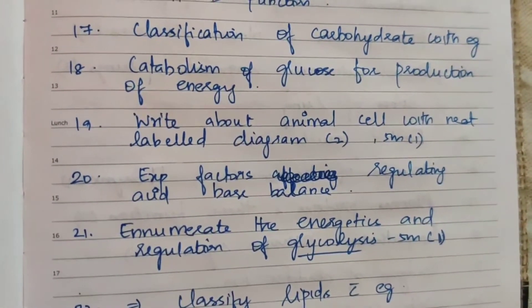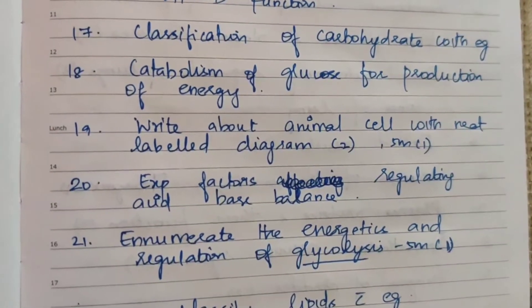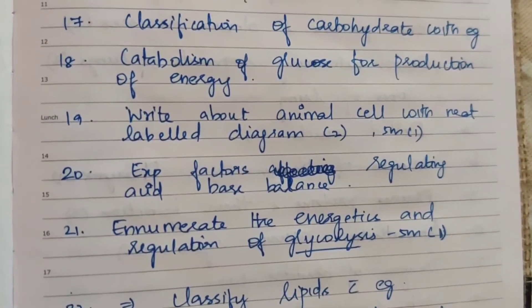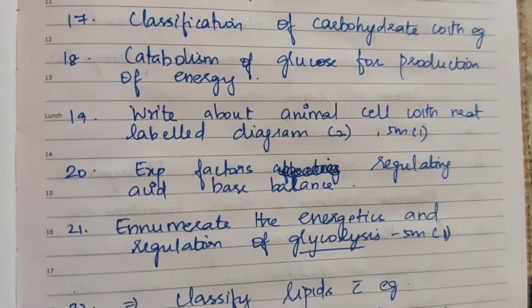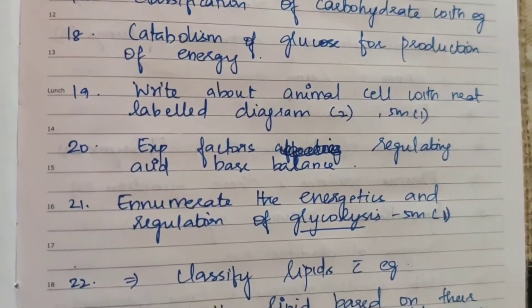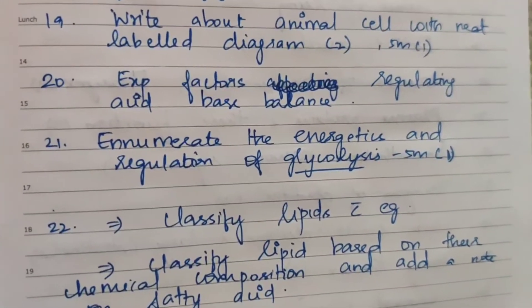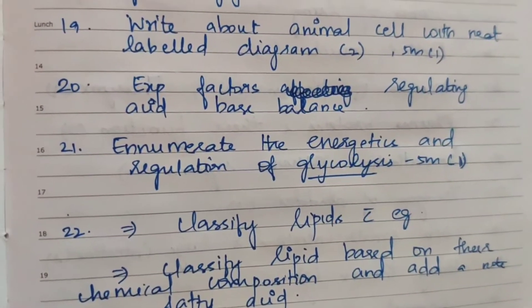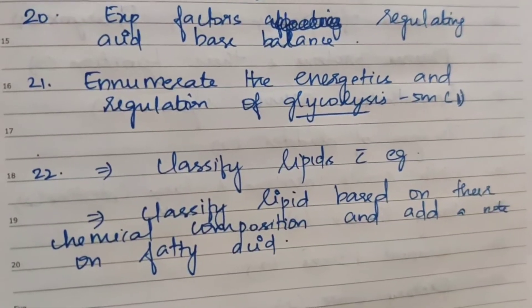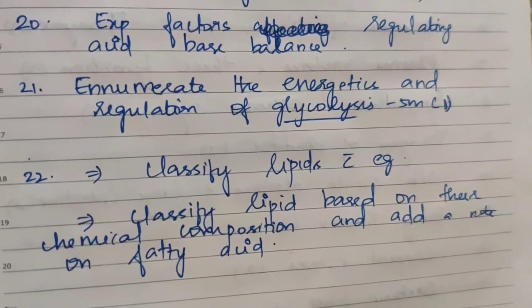The 18th topic: catabolism of glucose for production of energy. The 19th topic: write about the animal cell with a neat labeled diagram — appearing 2 times for 15 marks. The 20th topic: explain factors regulating acid-base balance. The 21st topic: enumerate the energetics and regulation of glycolysis; glycolysis also appears as a 5-mark question.